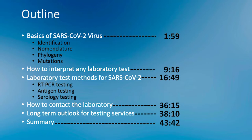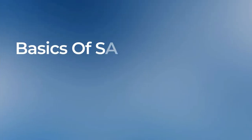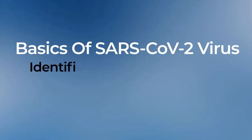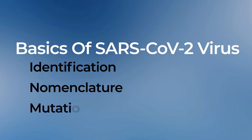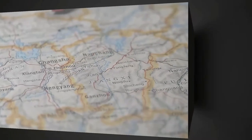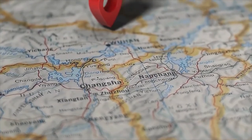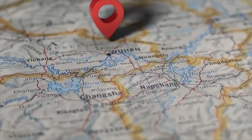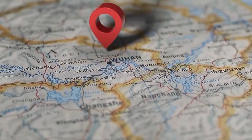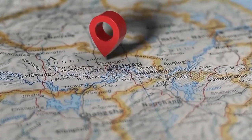As we go through the presentation, we will cover several topics, so feel free to skip to individual sections. Let us now start by going back a year in time. In early December 2019, a pneumonia of unknown cause was detected in Wuhan, China, and was reported to the World Health Organization.